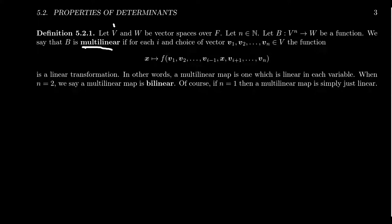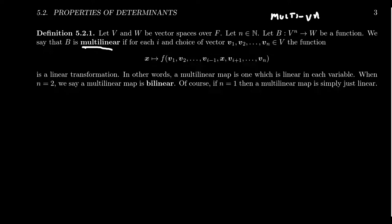We have two vector spaces V and W over the same field F. Pick your favorite natural number N so we can talk about V^N. A map B from V^N to W is potentially multilinear. We have a list of N vectors as input and a single output in W. Think of this as having N input variables — like in multi-variable calculus, where you take N vectors into the machine and output a single vector.